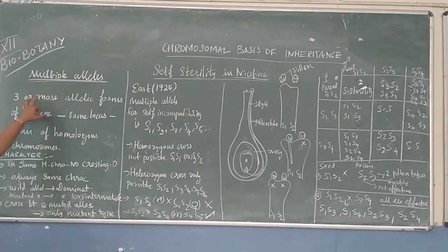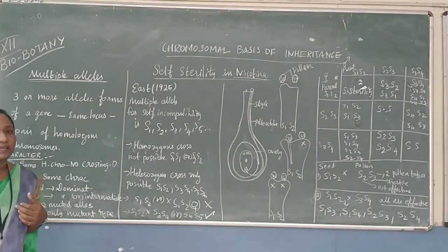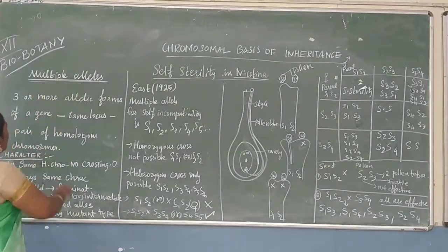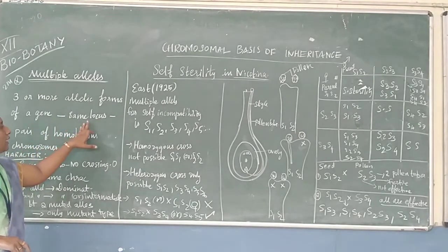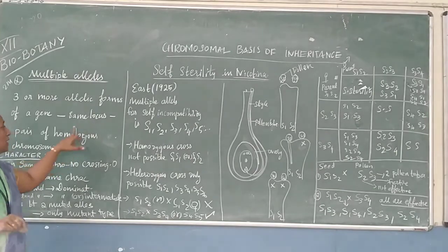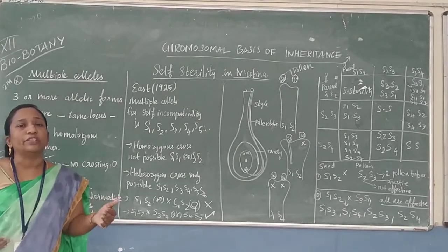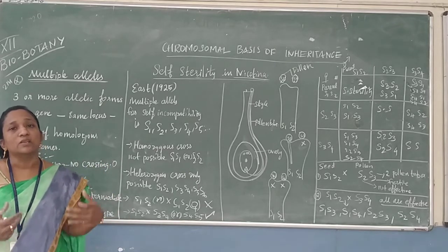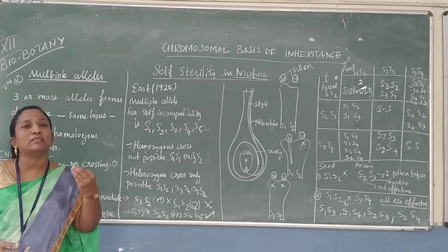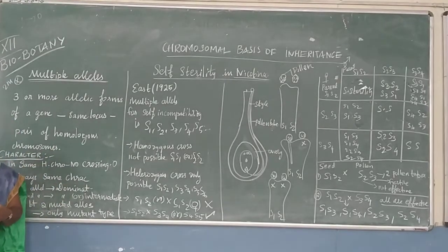So, more than two or three alleles are located in the same locus of homologous chromosomes, and they are maintained in the characteristic feature — that is called multiple alleles. Examples include blood groups like ABO blood group, as well as skin colour and hair patterns of human beings. These are all examples of multiple alleles, where more than a single gene controls the characteristic feature.